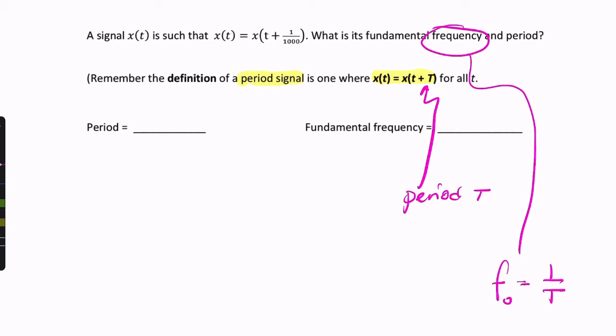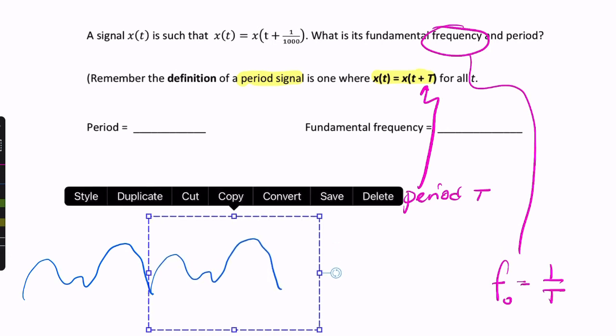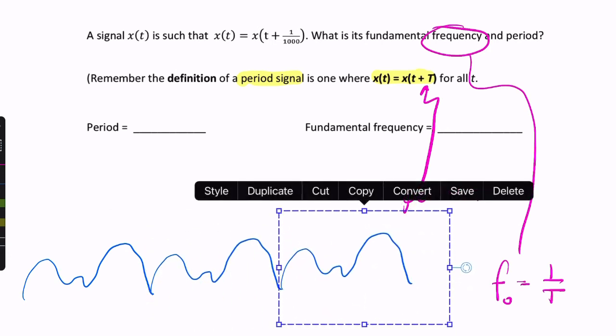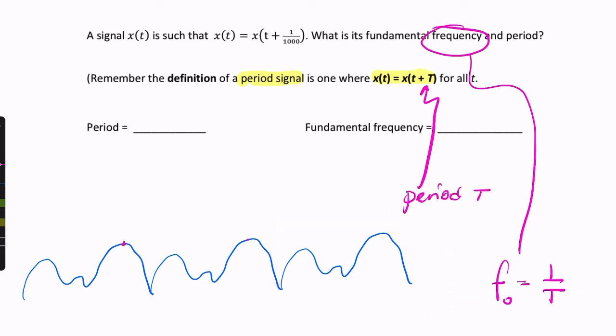So for any signal that repeats itself every T seconds, that means that there is an exact copy of that signal every T seconds. So the time between these identical points will be T seconds. Or between other identical points. It could be between this point here and this point here.